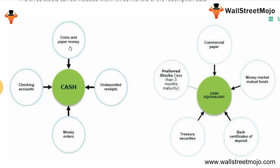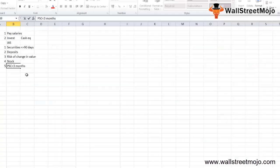In the flowchart, coins and paper money are included in cash, along with undeposited receipts, money orders, and checking accounts. As for cash equivalents, these include commercial papers, money market funds, bank certificates of deposits, Treasury securities, and preferred stock with a redemption period of less than three months.